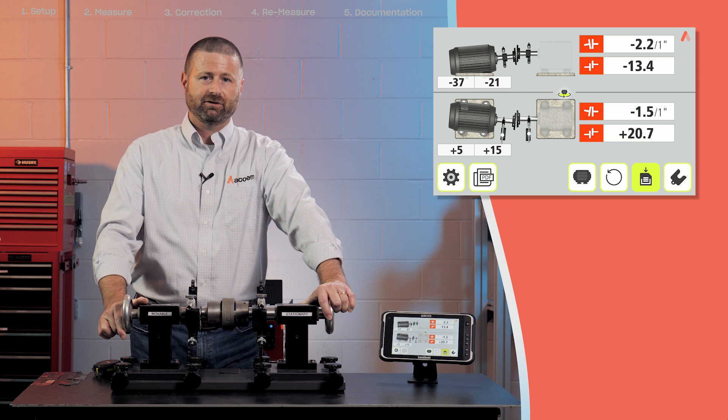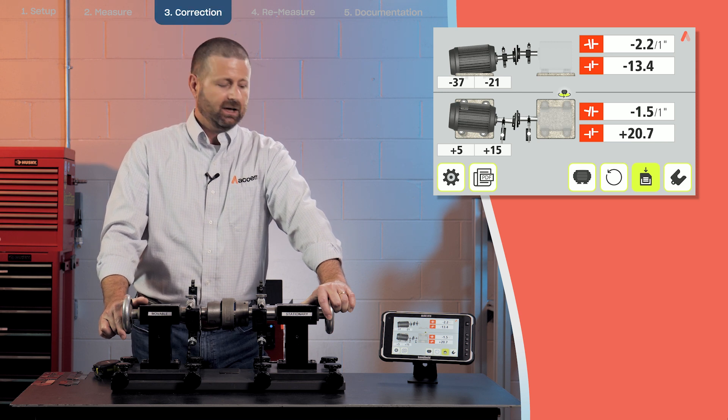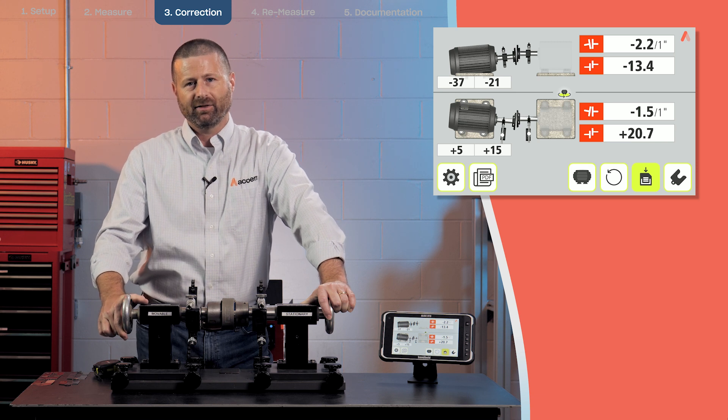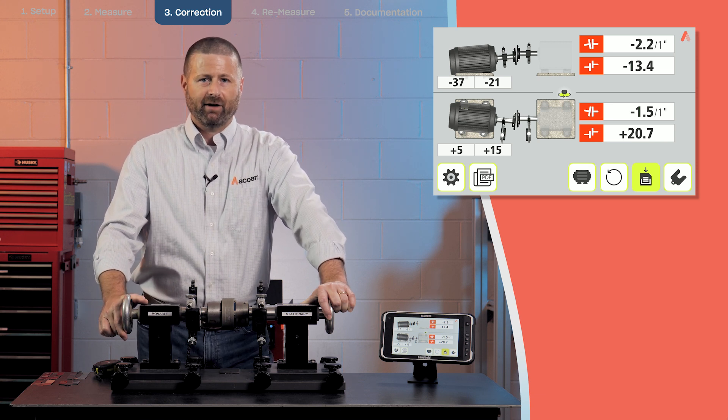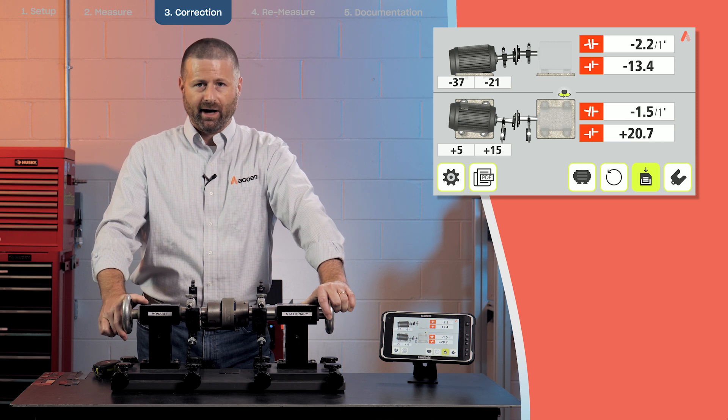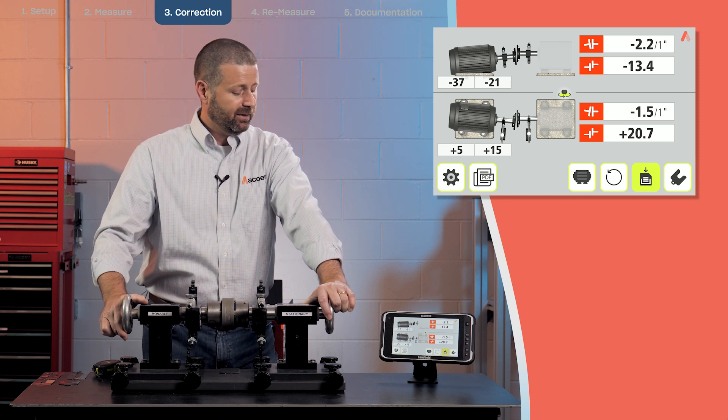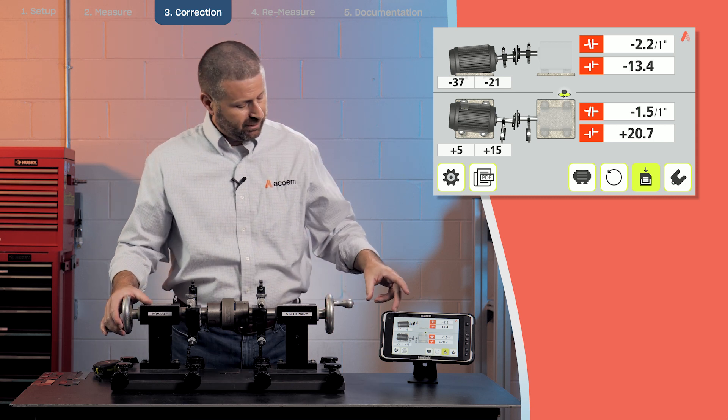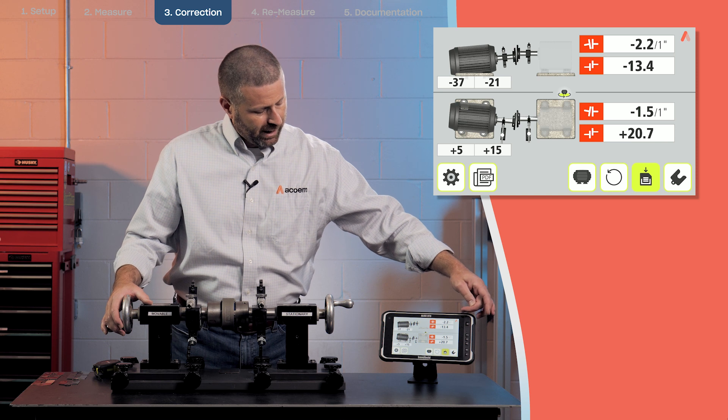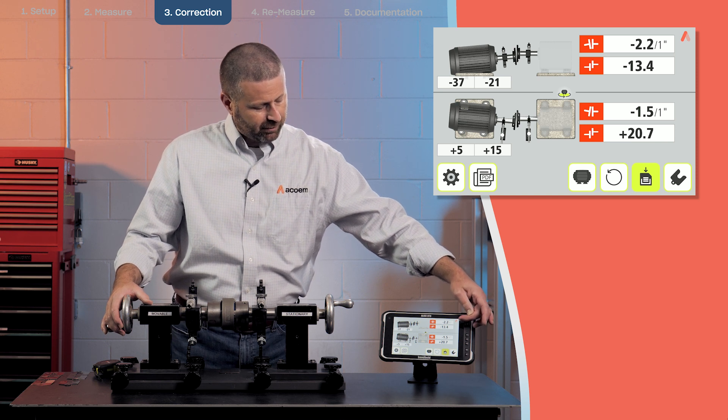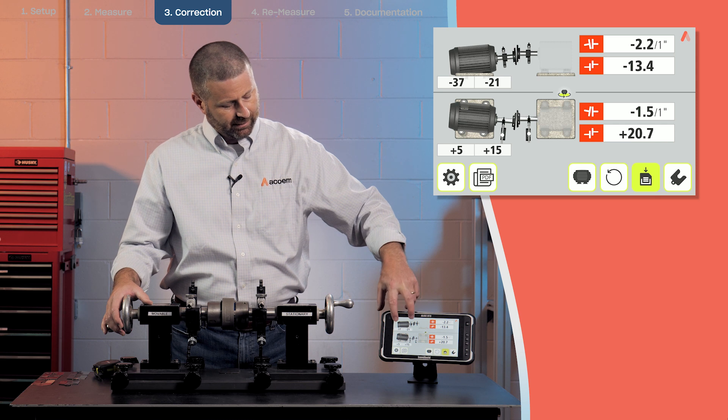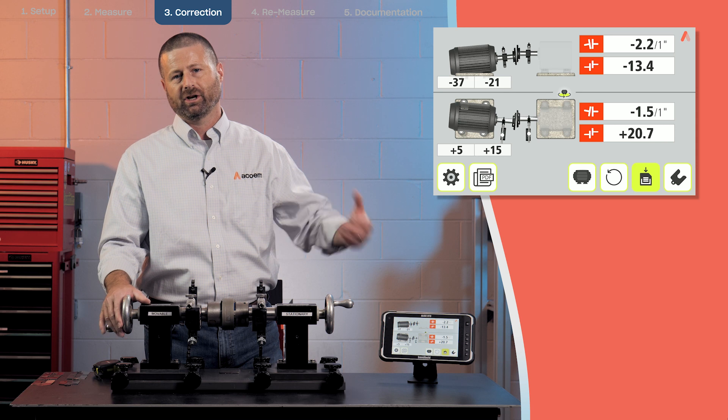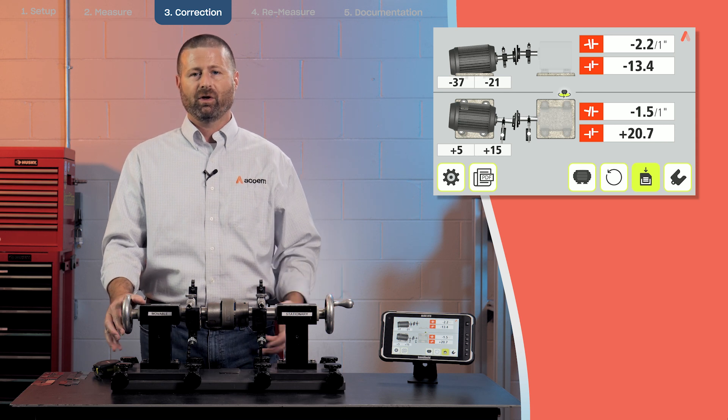So now we have a presentation of data. What you can see is all red, meaning that all of my values are outside the tolerance. The top set of values are the vertical values, and the second set are the horizontal values. This is where the angle and offset are vertical angle and offset horizontal. The numbers underneath the machine feet indicate how much I need to adjust the machine to get them within tolerance.